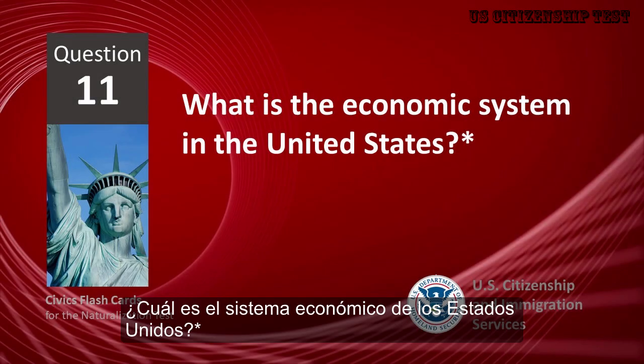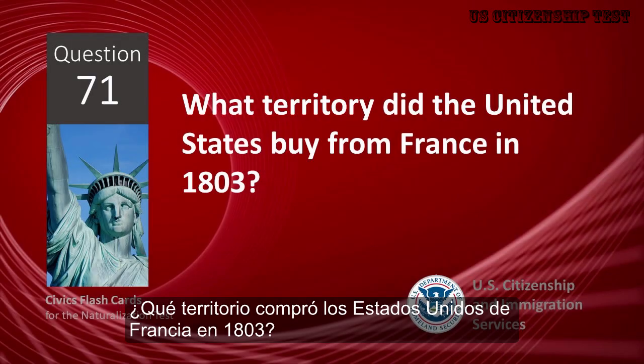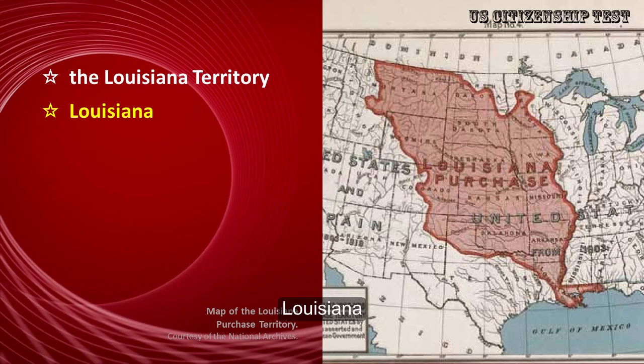What is the economic system in the United States? Capitalist economy. What territory did the United States buy from France in 1803? Louisiana.